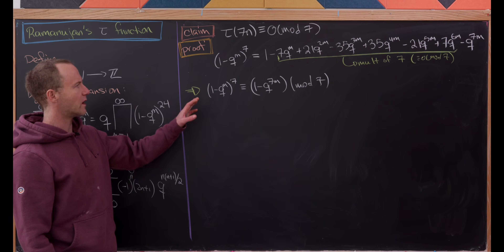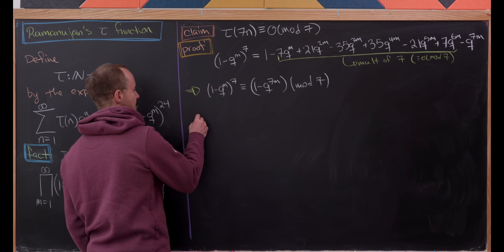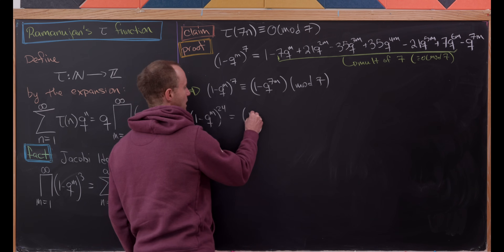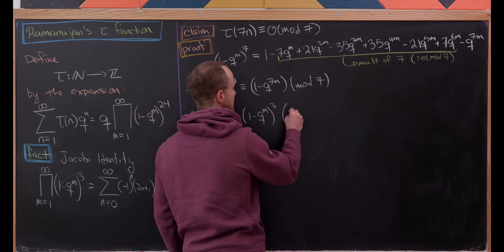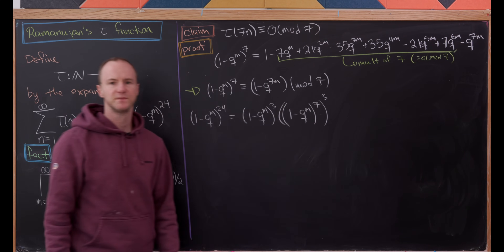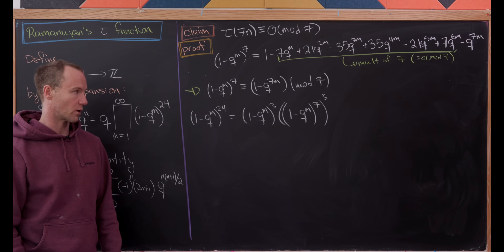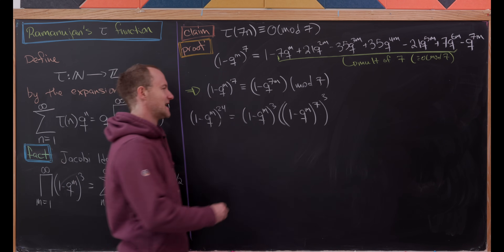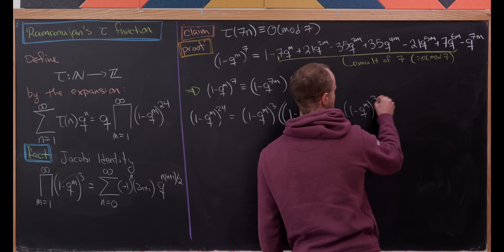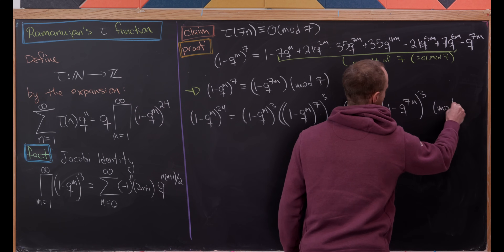But we don't have (1 - q^m)^7, we have (1 - q^m)^24. Let's see how we can use that. Observe that (1 - q^m)^24 equals [(1 - q^m)³ times (1 - q^m)^7]³. So we can use our result on the inner (1 - q^m)^7 term, giving us (1 - q^m)^24 ≡ [(1 - q^m)³ times (1 - q^(7m))³] mod 7.